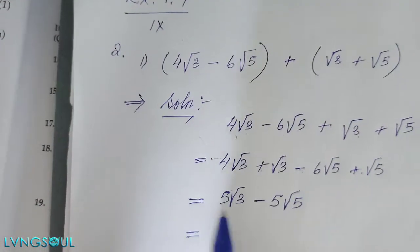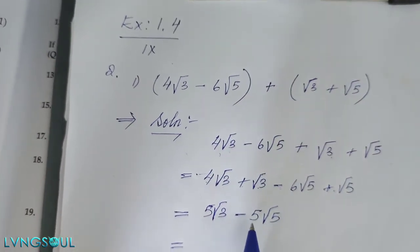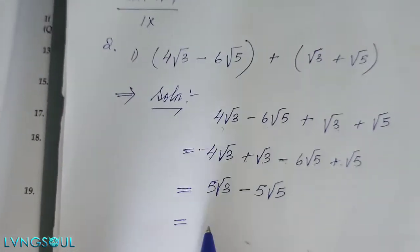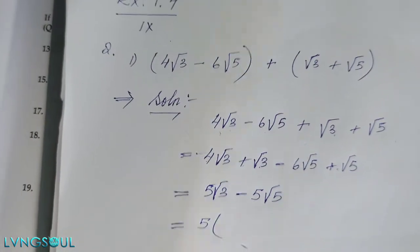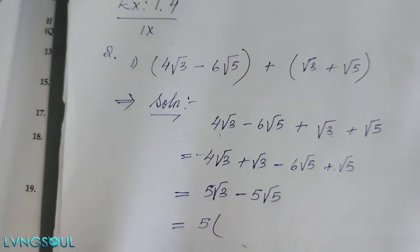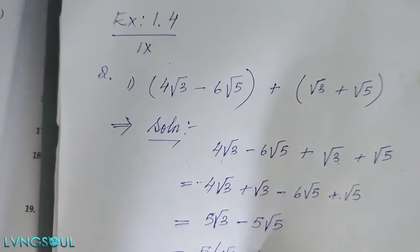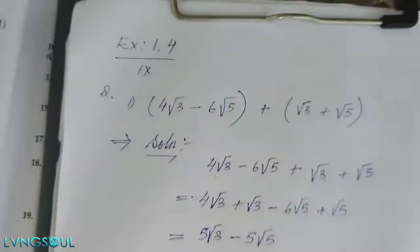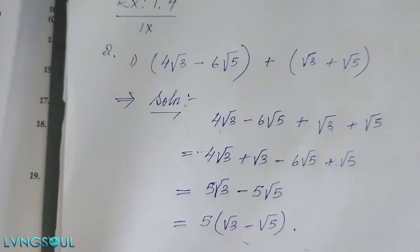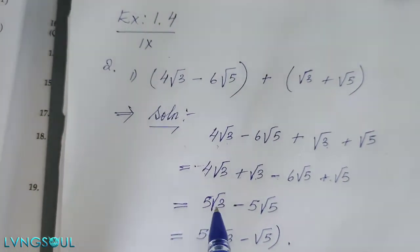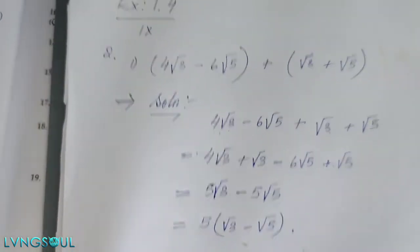Simplified: the answer is 5 root 3 minus 5 root 5, which we can write as 5 into bracket root 3 minus root 5.